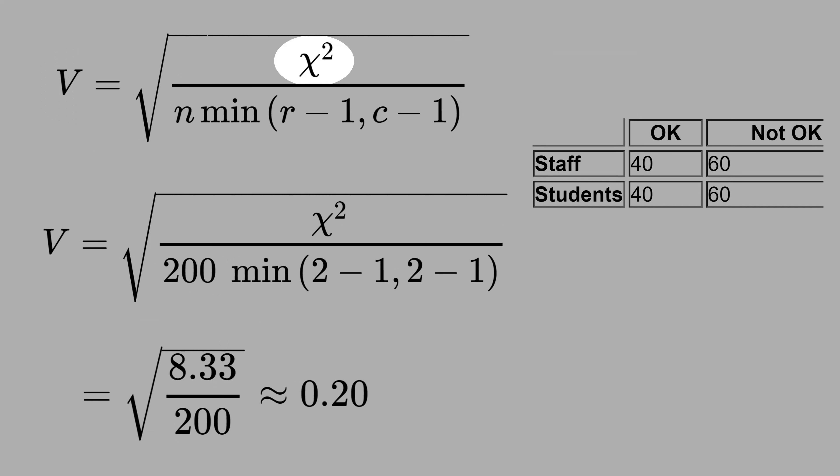That is the chi-square normalized. This N here is the total number of observations, that in this case is 200, because you have 100 students and 100 staff. And this is the minimum between row and column, whatever is smaller. We have 2 rows and 2 columns, and the minimum between 1 and 1 is 1.